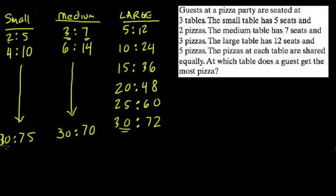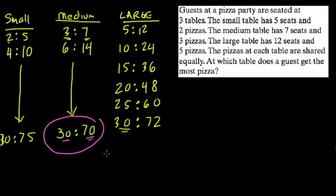So with thirty pizzas: the small table feeds seventy-five people, the large table feeds seventy-two people, and the medium table feeds only seventy people. The answer is the medium table. Think about what the ratio represents — if you have thirty pies and more people to feed, those people get less pizza. The medium table has the fewest people to feed with thirty pies, so that's where you'd sit to get the most pizza.